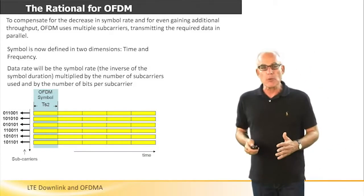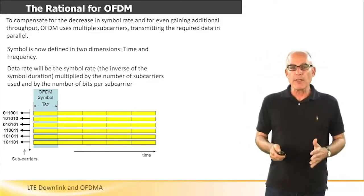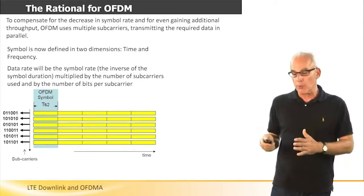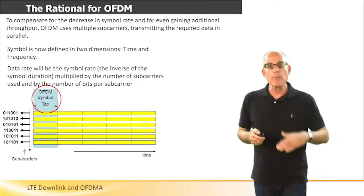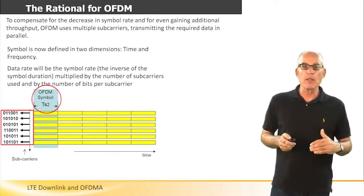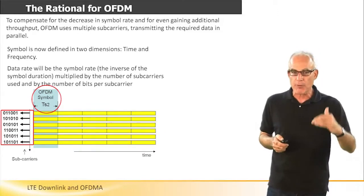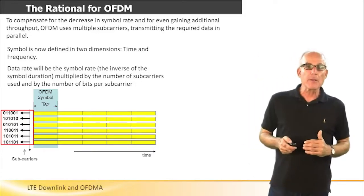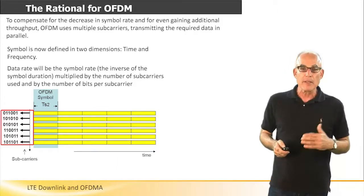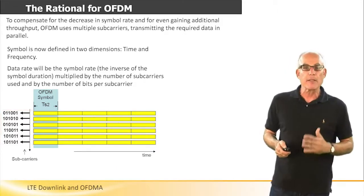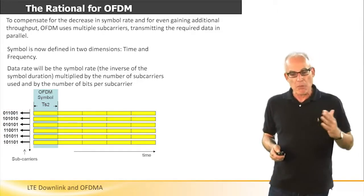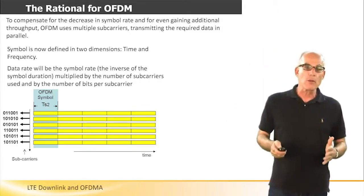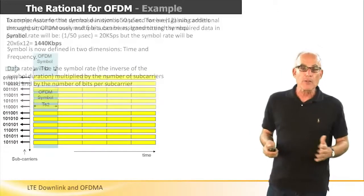So what does FDM do? FDM compensates for the fact that the symbol rate was reduced due to the extension of symbol duration, and adds parallel subcarriers, each modulated by a portion of the data. So in this example, we see six subcarriers being used, and of course a higher number of subcarriers can also be used. In fact, in LTE, 100, 300, 500, and in some channel bandwidths, even more than 1,000 subcarriers can be used.